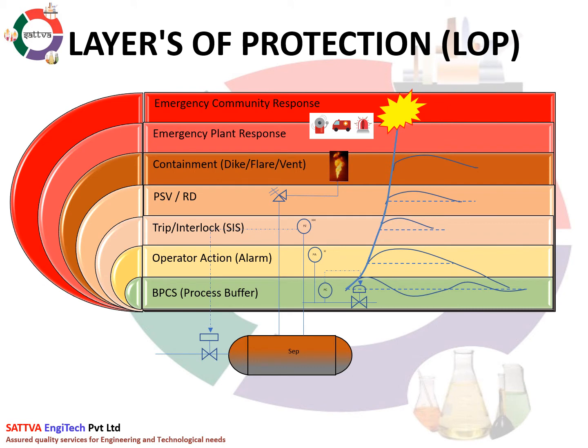If this situation is not in control, then the emergency community response team will take control and try to minimize further escalation. This layer is typically controlled by a regional team working together to keep the surroundings safe.